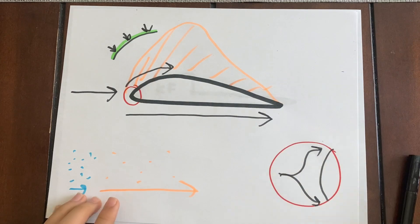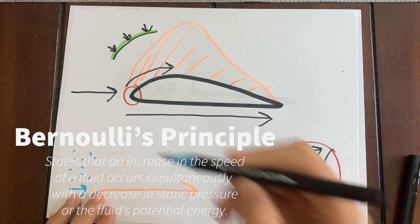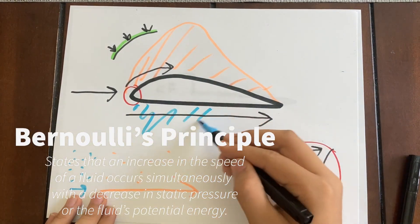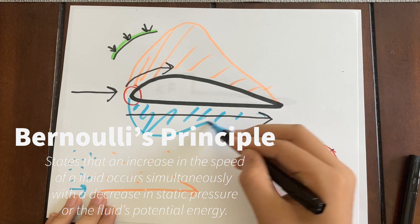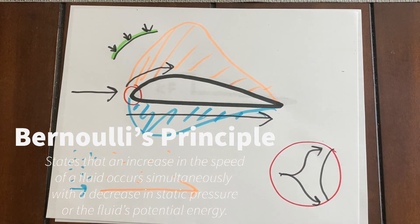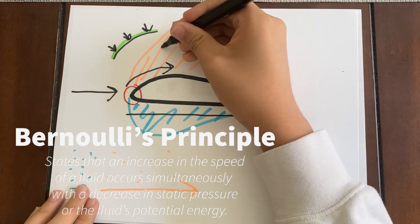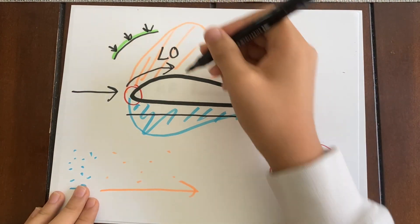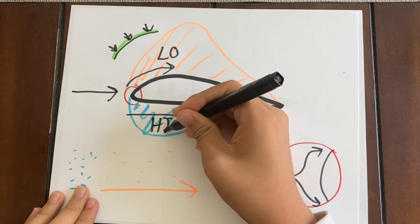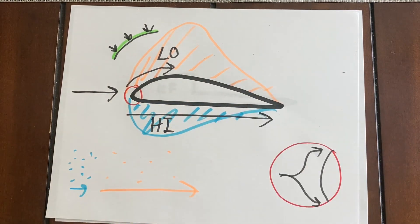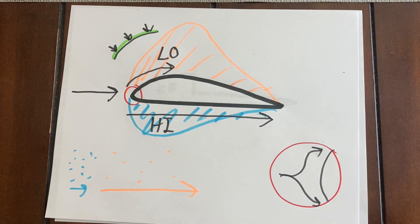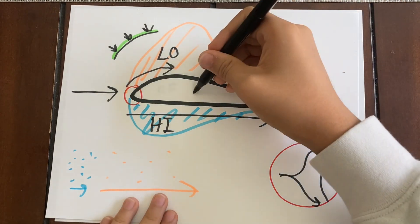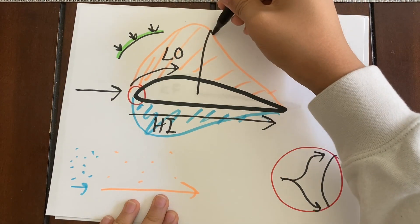This is part of what's known as Bernoulli's principle, which states that an increase in the speed of a fluid occurs simultaneously with a decrease in static pressure or the fluid's potential energy. We now find that there's a massive pressure difference between the top and bottom surface of an airfoil — a low pressure on top, a higher pressure on the bottom.